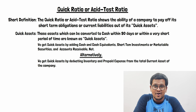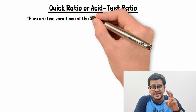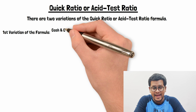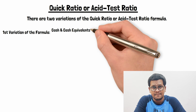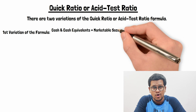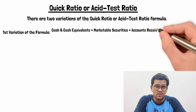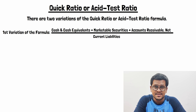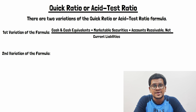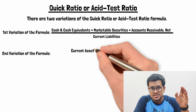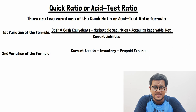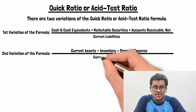Let's have a look at the formula of quick ratio. There are two variations. The first variation is where we add cash and cash equivalents, plus short-term investments or marketable securities, plus net accounts receivable, then divide by total current liabilities. The second variation is where we take total current assets and deduct inventories and prepaid expenses, then divide by total current liabilities.